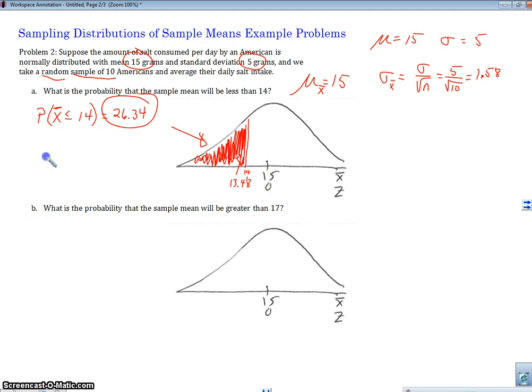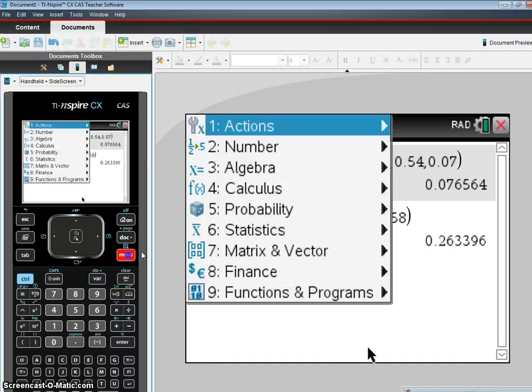Now, we could also find a z-score if we wanted to. The z-score is going to be x̄ minus μ over standard deviation of x̄, which is this right here. So I'm going to write it as σ over square root of n. This will be the z-score for a sampling distribution. I plugged it all in and found the z-score. That would be how we would find that as well. So what is the probability that the sample mean will be greater than 17? Well, that's over here. And we want this area here. So let's go to normal CDF again. We're using a μ of 15 and a standard deviation of 1.58 for the sampling distribution.